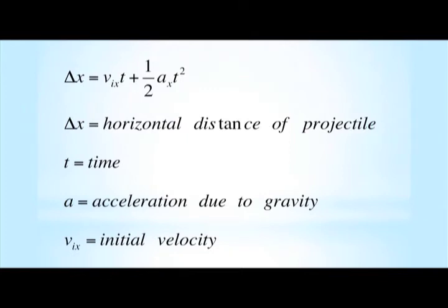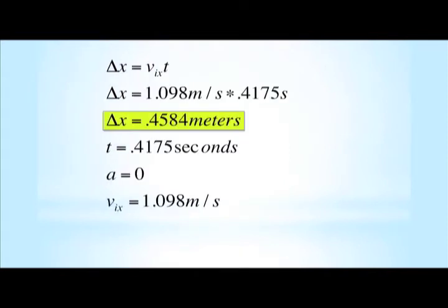We can simplify the equation by canceling the right side as the acceleration in the x-direction is zero. Substituting the 0.4175 seconds it takes the ball to fall and the x-velocity we can solve for the delta x. I calculated the x distance from the plumb bob point on the floor to where I estimated the ball would land to be 0.4584 meters.